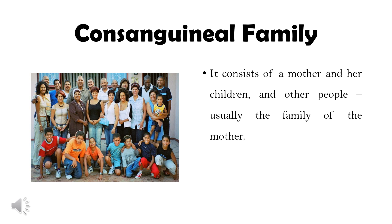The third type would be the consanguineal family. A consanguineal family consists of a mother and her children and other people, usually the family of the mother. This kind of family is common where mothers do not have the resources to rear their children on their own, and especially where property is inherited. When important property is owned by men, consanguineal families commonly consist of a husband and wife, their children, and other members of the husband's family.